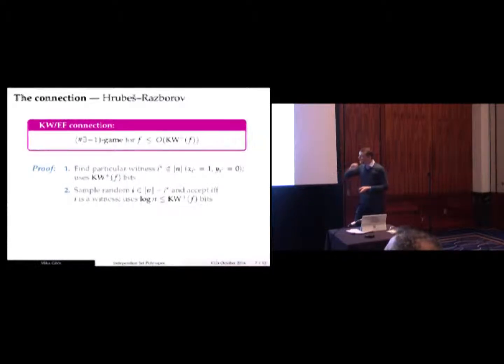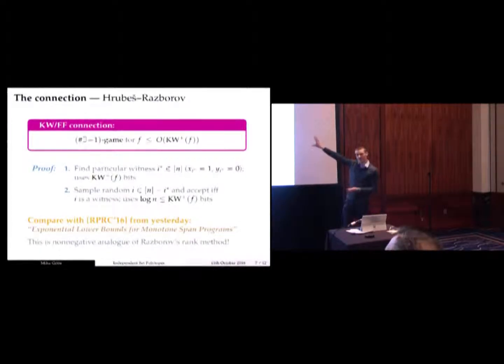You've seen something like this before. Yesterday, Robert talked about this Razborov magical rank-lower-bound method. What we're doing here, and this is how Hrube came up with this connection, is that it's a non-negative analog of this Razborov method. In Razborov's method, maybe you remember there was this magical matrix. In our setting, it corresponds to the slack matrix. It shouldn't be obvious exactly why these are analogous, but you have to stare at it for a while. I really feel like this connection is something that if you work in either of these areas, you need to be aware of. It's underappreciated in the literature.